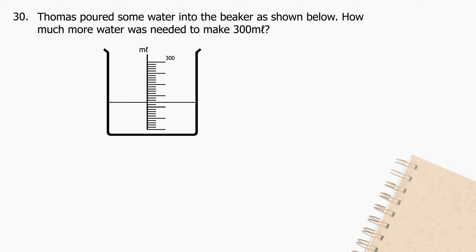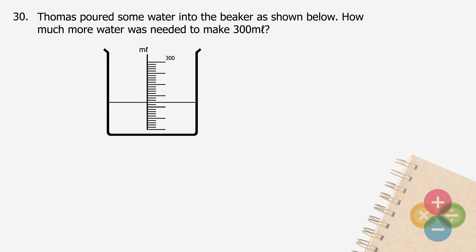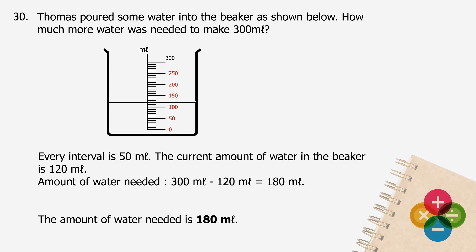Question 30: Thomas poured some water into the beaker as shown below. How much more water was needed to make 300 ml? Every interval is 50 ml. The current amount of water in the beaker is 120 ml. The amount of water needed will be 300 ml minus 120 ml, and the difference is 180 ml.